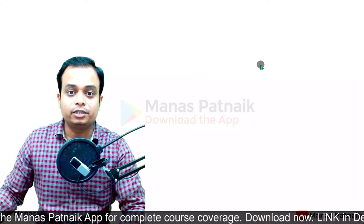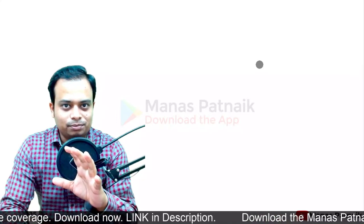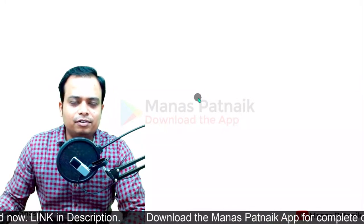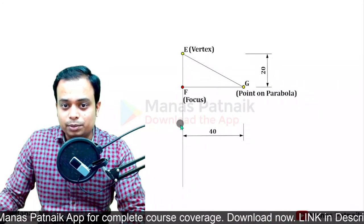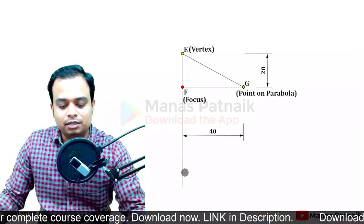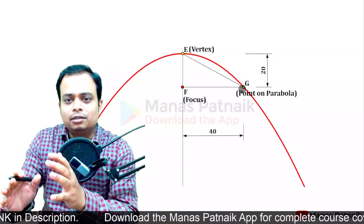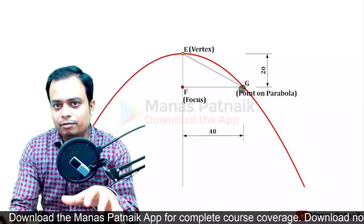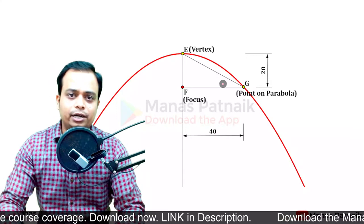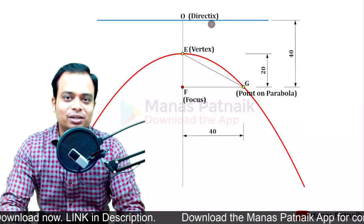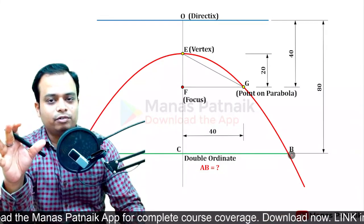Today's question is going to be very interesting. We have a triangle where this is the vertex, this is the focus - a particular point on the parabola - and this is the axis of the parabola. A parabola passes through point G. We'll be applying the rectangle method to construct it. We also need to create the directrix, find the double ordinate, and calculate the length between A and B.